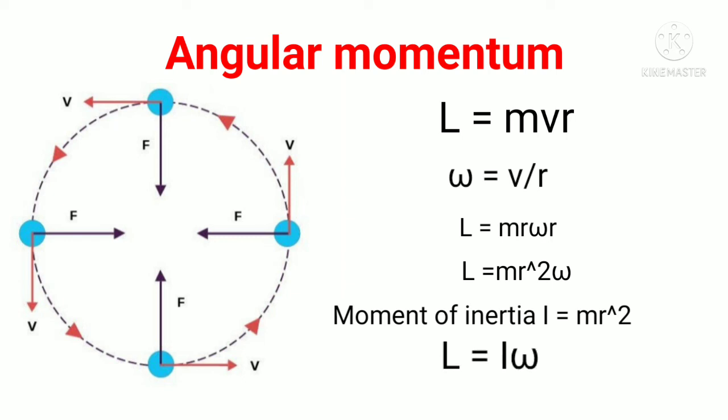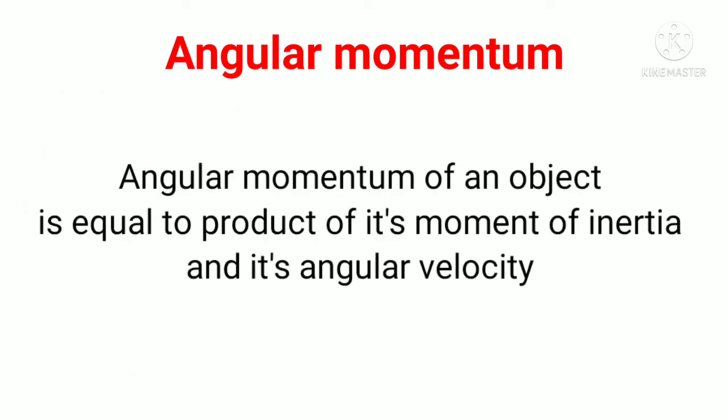From this, we can say that angular momentum of an object equals the product of its moment of inertia and its angular velocity.